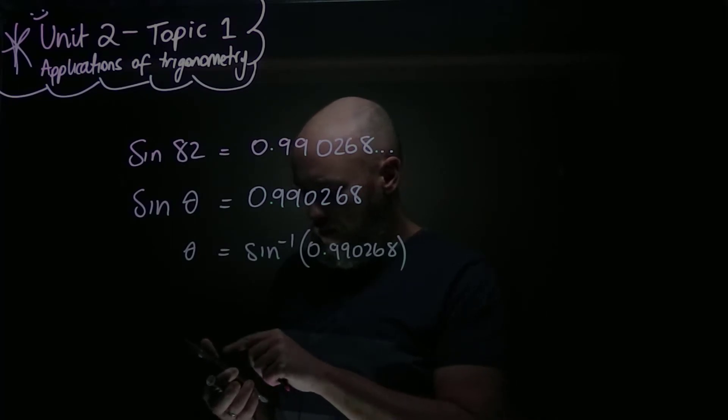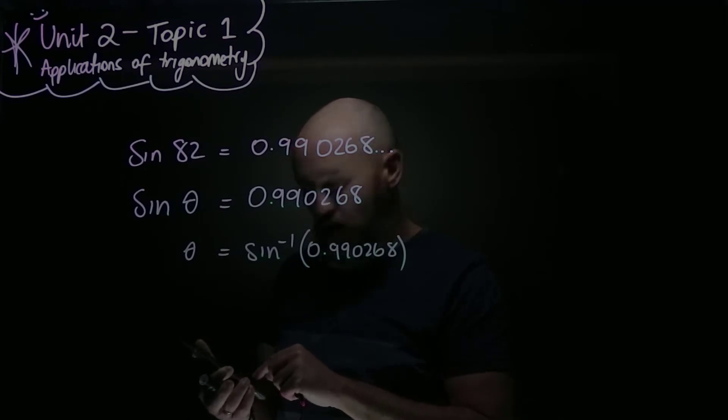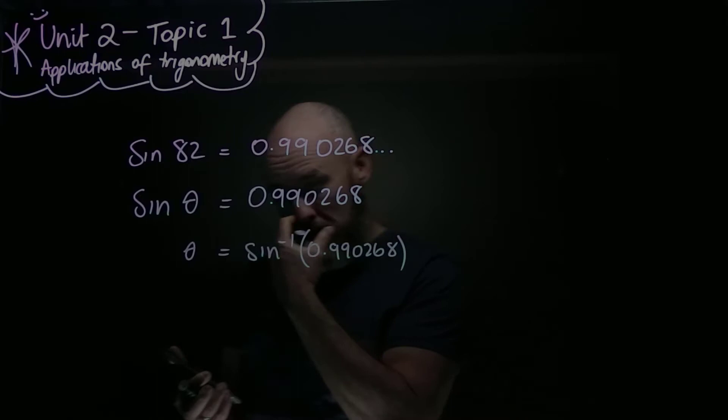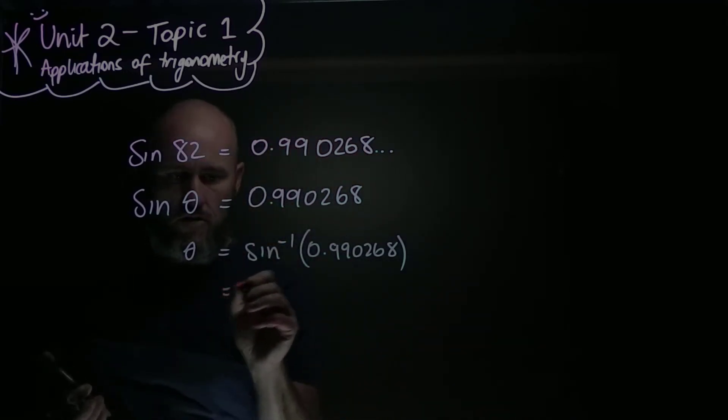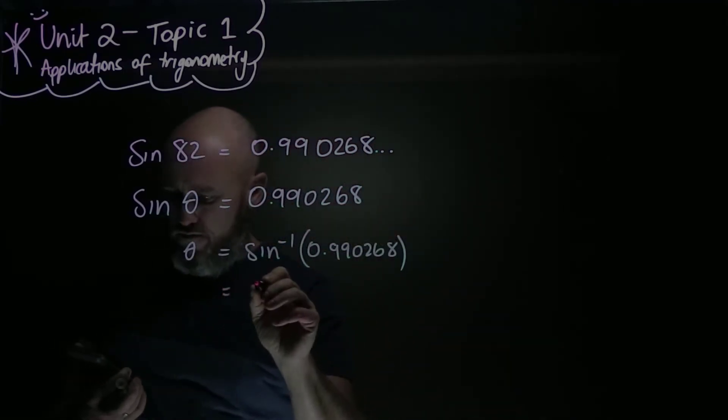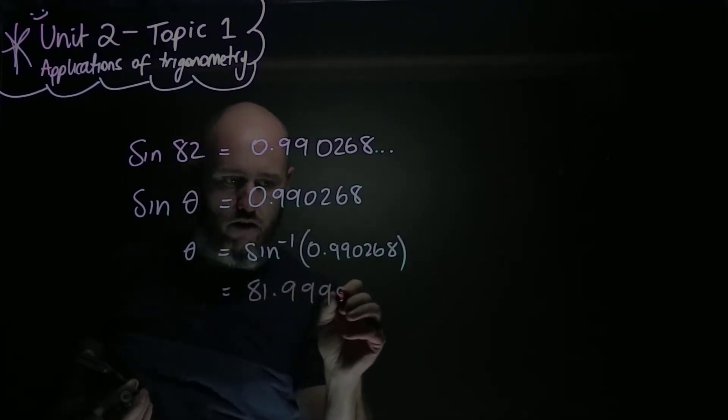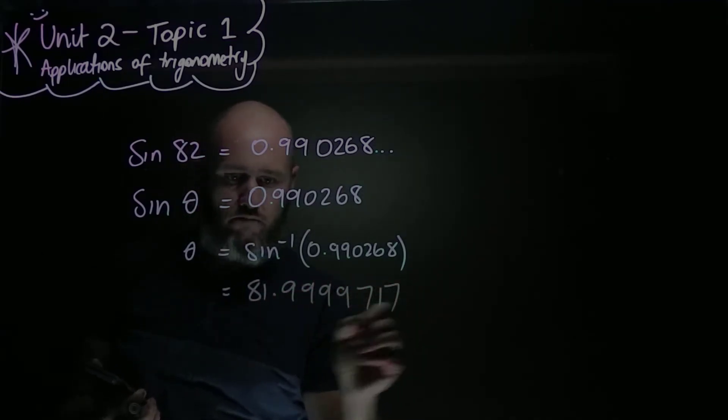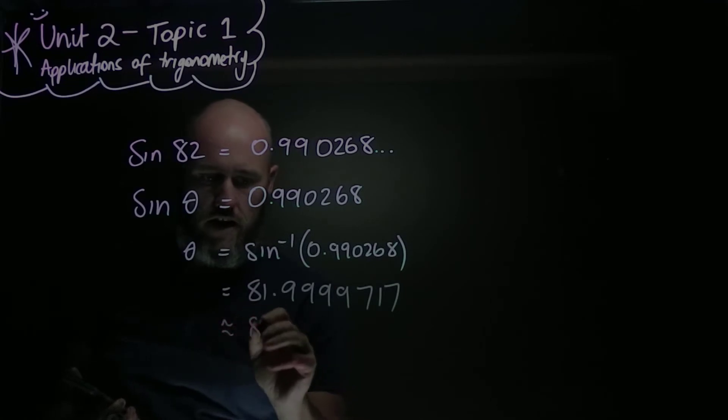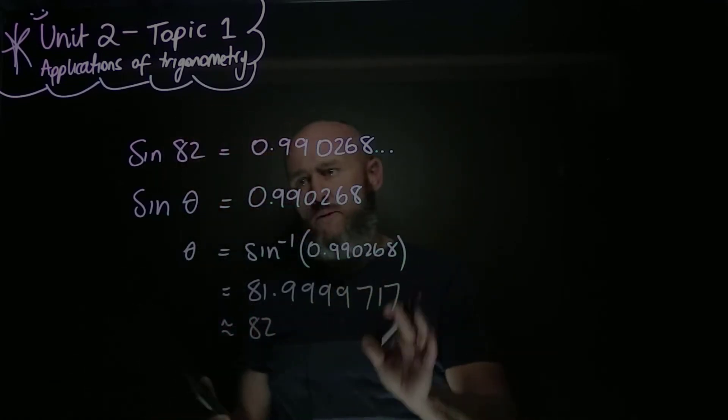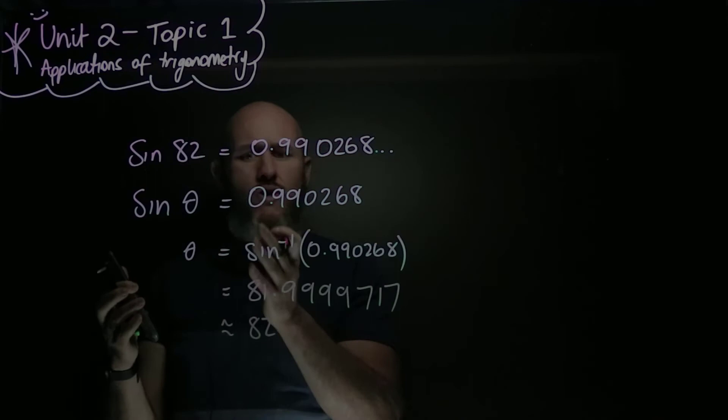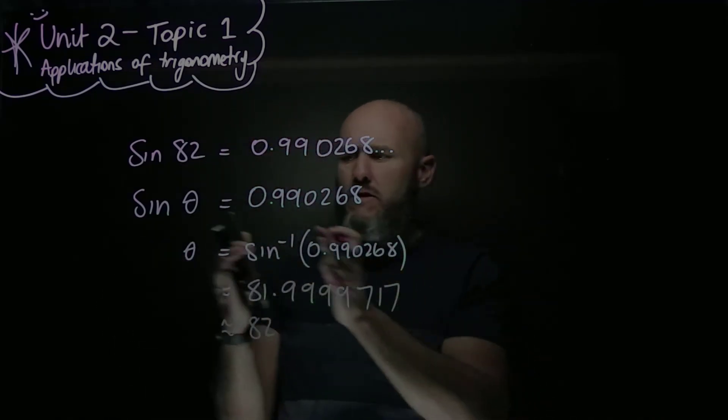So I do shift sine of 0.990268, and that gives me not quite 82, because obviously I rounded it here, but it gives me 81.9999717. So, essentially, 82. So that's the reverse operation. We can do sine of a number, or we can do sine inverse of a number to get the reverse.